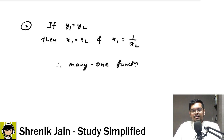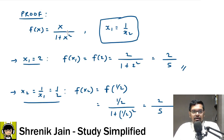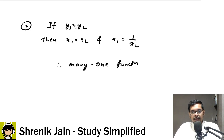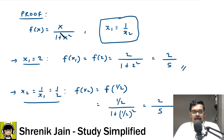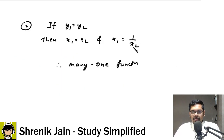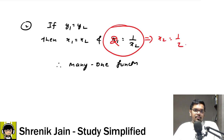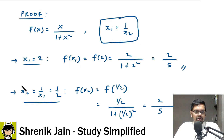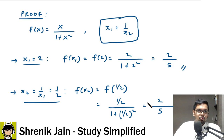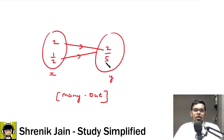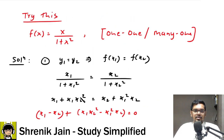To verify with an example: take x1 = 2. Then f(2) = 2/(1+4) = 2/5. From x1 = 1/x2, x2 = 1/2. Then f(1/2) = (1/2)/(1+1/4) = (1/2)/(5/4) = 2/5. So when input is 2 the output is 2/5, and when input is 1/2 the output is still 2/5. Inputs are different but output is common — confirmed many-one function.